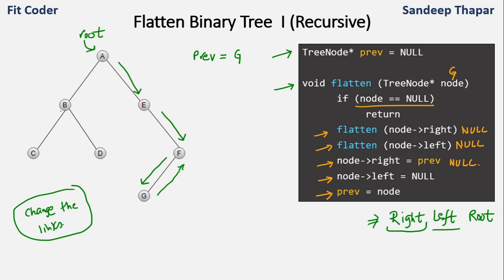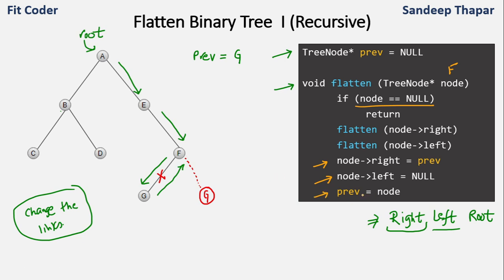The function call to G ends and we go back to F. Now we set right of F to previous, which is G, and set left of F to null, breaking that link. Then we set previous equal to F. The function call to F ends and we go back to node E. We set right of E to F — this is already the same. We set left of E to null — already null. Then we set previous equal to node E. We are fixing the tree in a bottom-up manner.